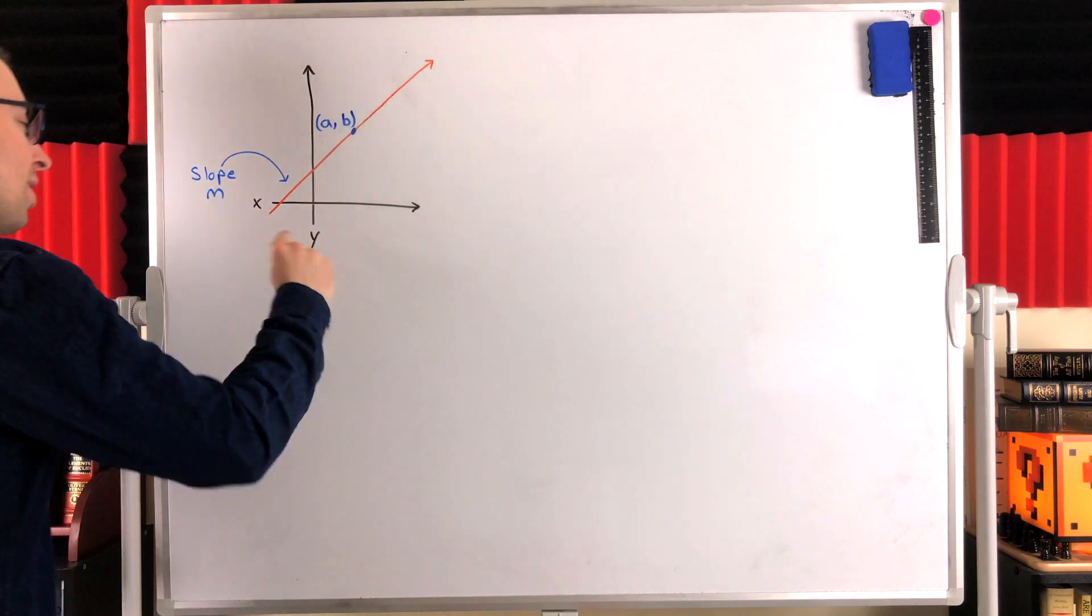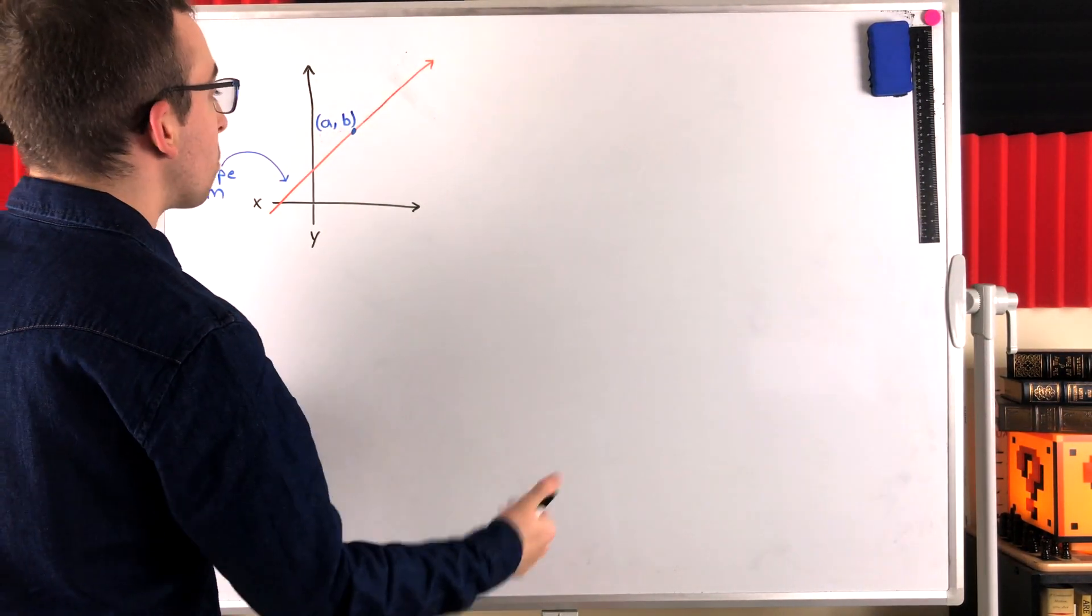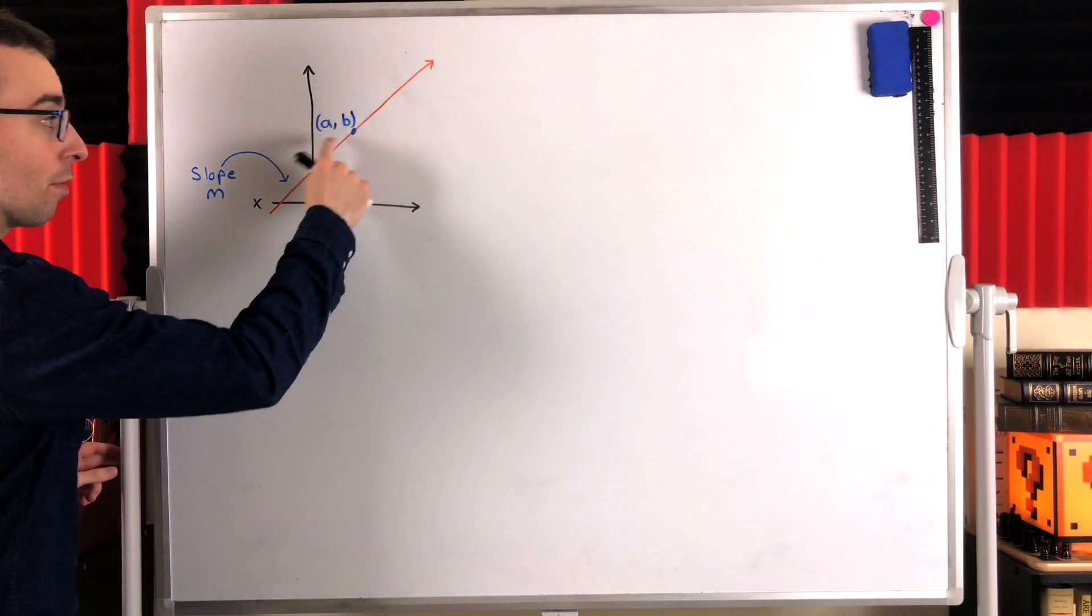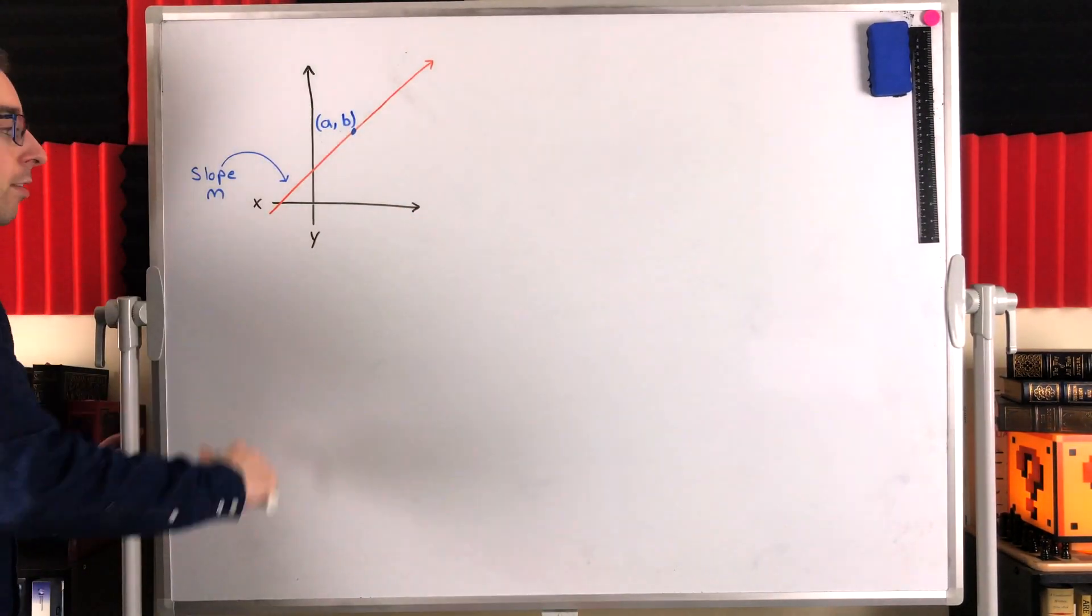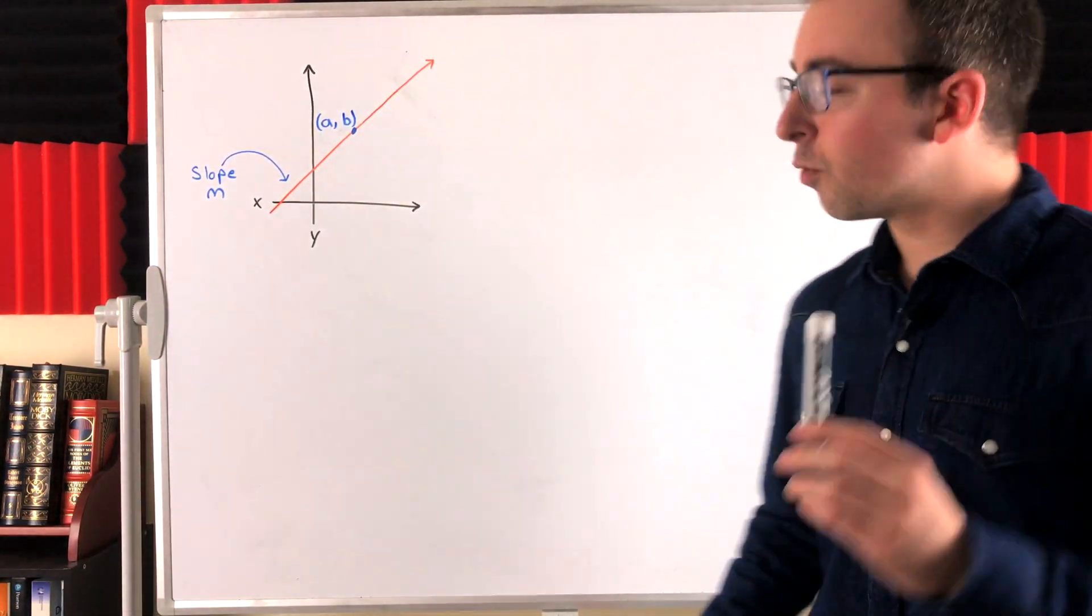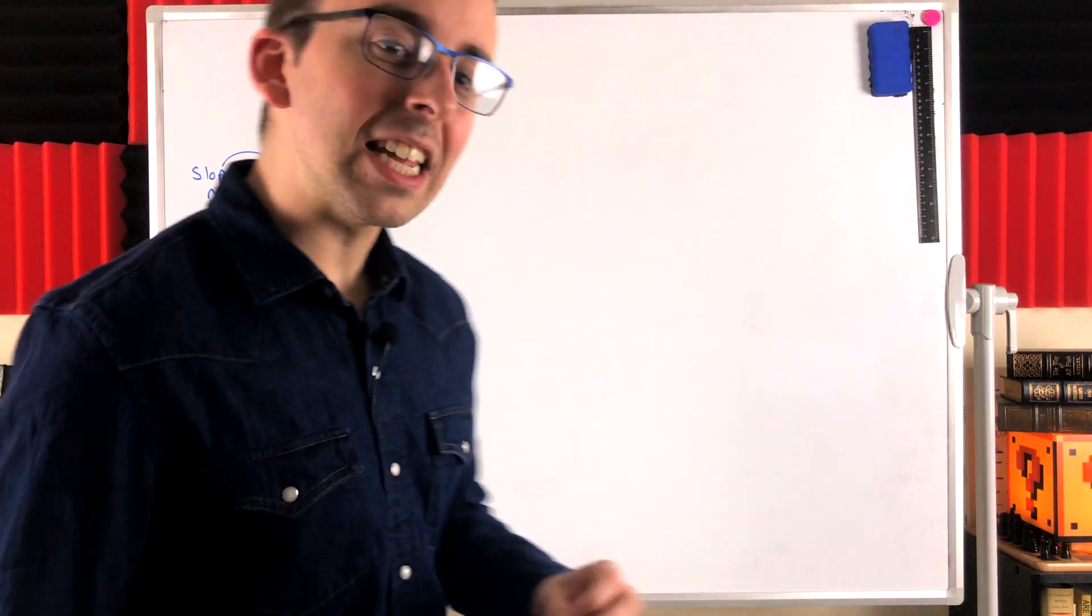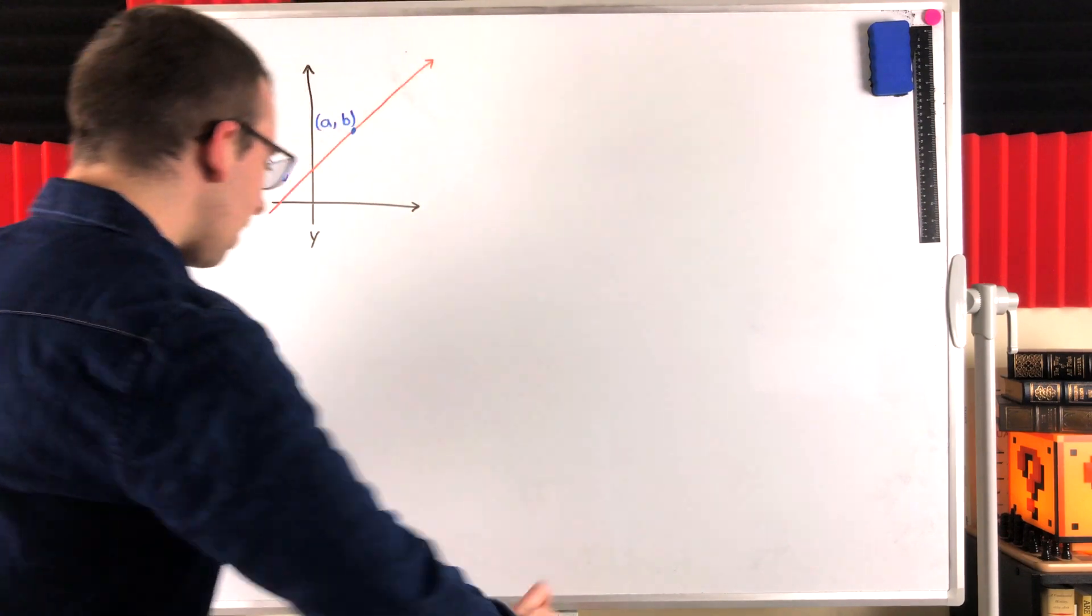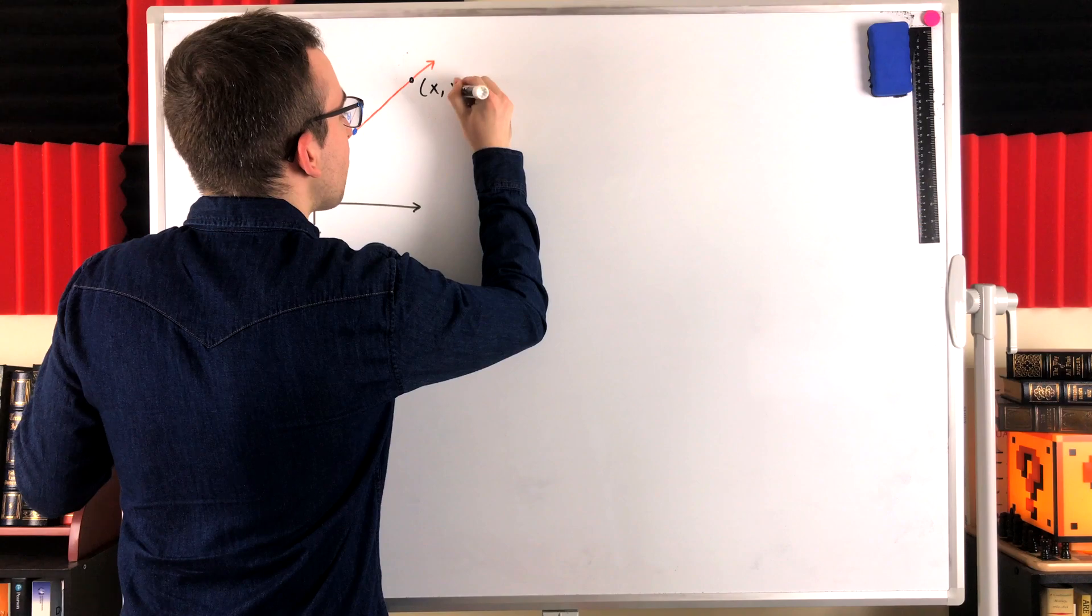We'll see how with this general example. Here we've got our XY plane and we're given this arbitrary orange line that has a given point of AB. That's just some point on the line. We're also given that the slope of the line is M. In order to write an equation for this line, we need an equation that will tell us how the coordinates of any point on the line must relate to each other. So, let's just draw an arbitrary point on the line. We'll call it XY.